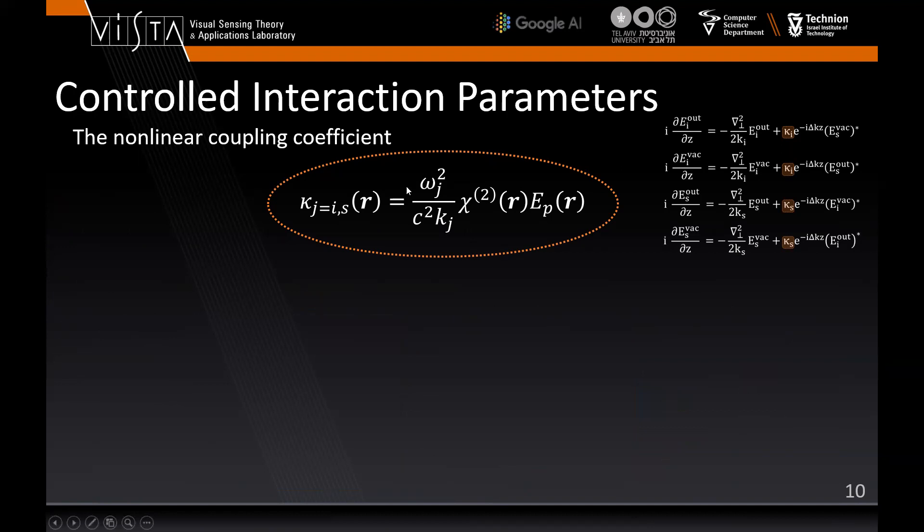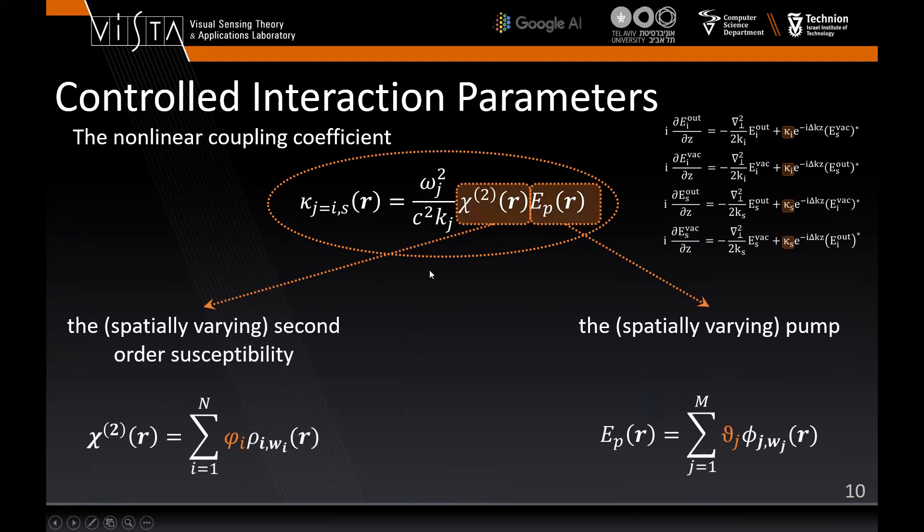Through the nonlinear coupling coefficient, we see how we can actually control the spatial degrees of freedom and engineer high levels of entanglement. We see that the responsibility can generally be given to the pump or the crystal, and learning them together allows us for more degrees of freedom in implementation.